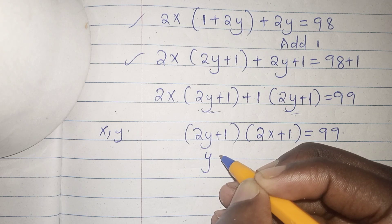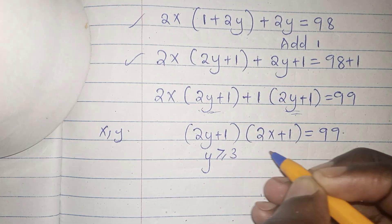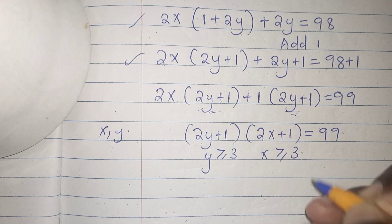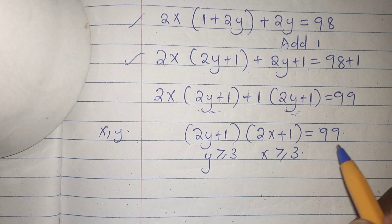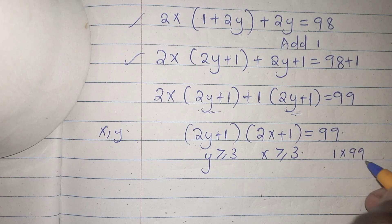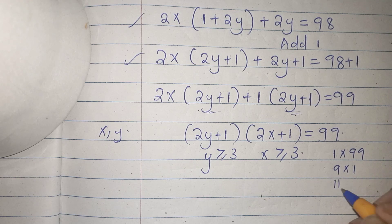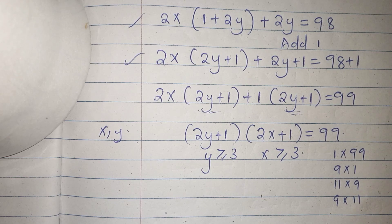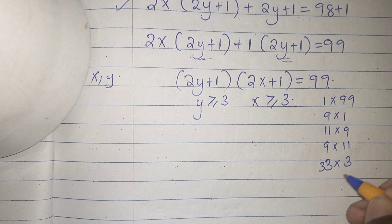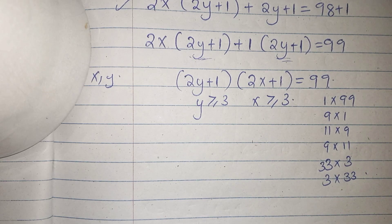We now look for the factor pairs of 99: 1 times 99, 99 times 1, 11 times 9, 9 times 11, 33 times 3, and 3 times 33.